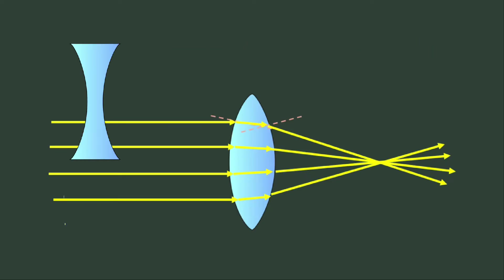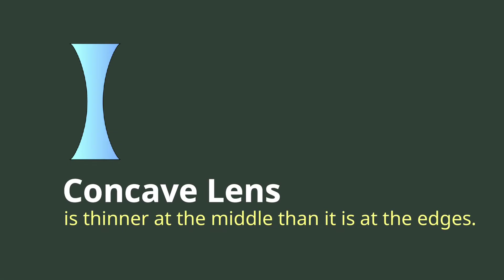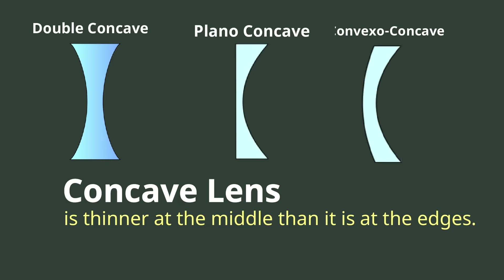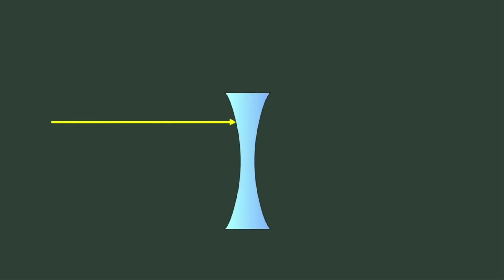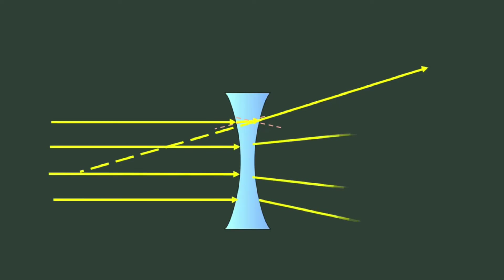On the other hand, the concave lens is thinner at the middle than it is at the edges. The three forms of the concave lens are the double concave, plano concave, and convex-concave. Like in the convex lens, the light ray incident to the concave lens bends towards the normal as it passes through it, and then bends away from the normal as it emerges from the lens. These bendings cause the light rays to diverge, traveling directly away from an imaginary focal point or focus.